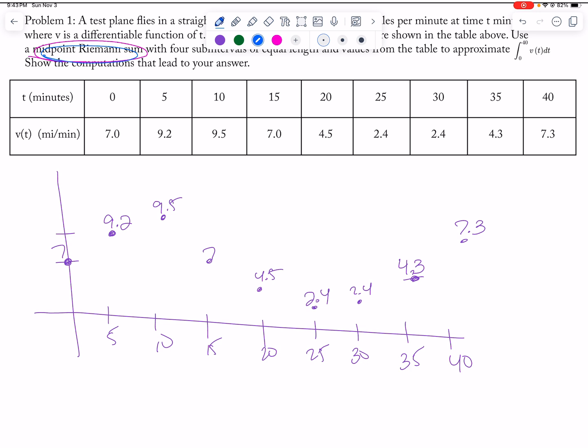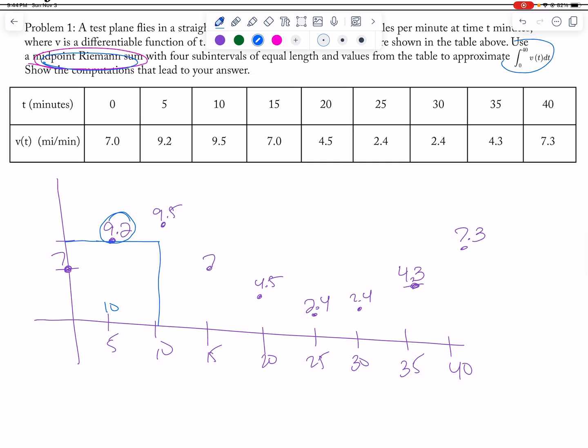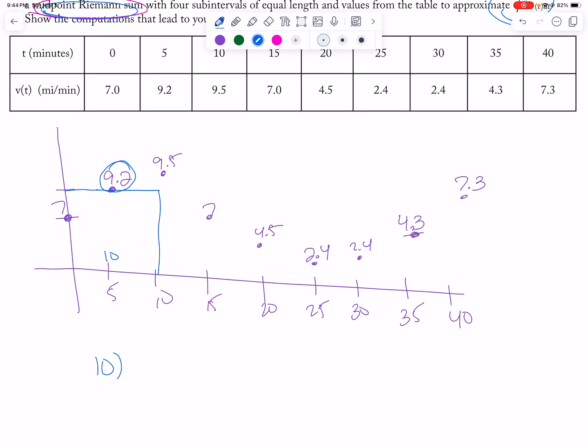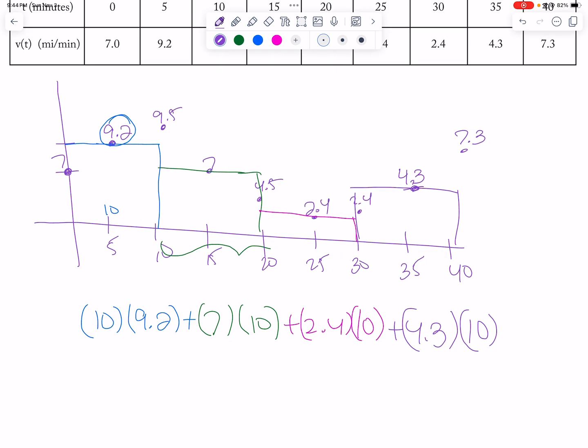So this MRAM here, this is the middle value. So it's 10 by 9.2. There's no number in front here, so it's 10 times 9.2 plus, and then it'll be 7 times this distance here, which is 10. And then here, 2.4 times the distance of 10. And then lastly is this 4.3 here. And then you just add all of them up. That's how you get your MRAM.